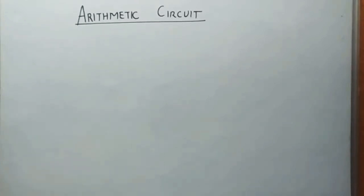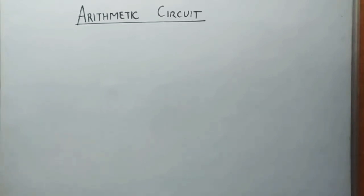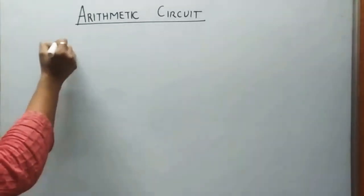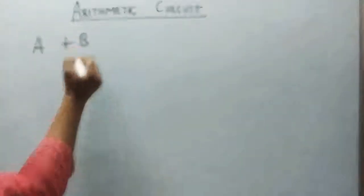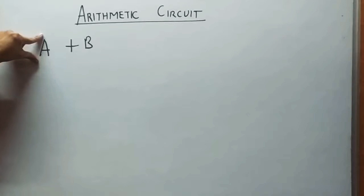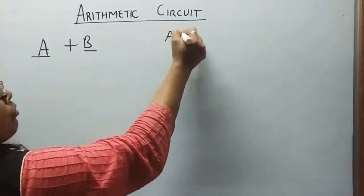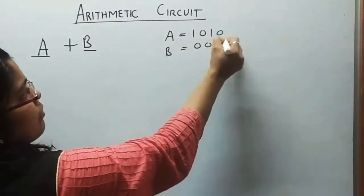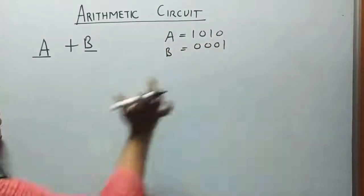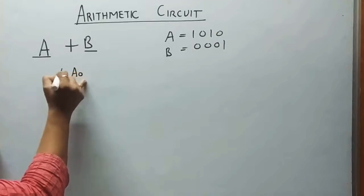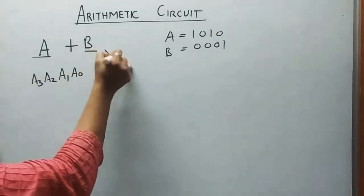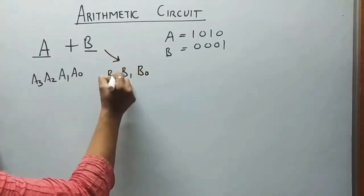Hello friends, today we are going to discuss the arithmetic circuit. Before applying all operations on the arithmetic circuit, we will think about some basic operations. For the add operation A plus B, A is a 4-bit number and B is a 4-bit number. For example, A equals 1010 and B equals 0001. A can be written as a0, a1, a2, a3 and B as b0, b1, b2, b3.